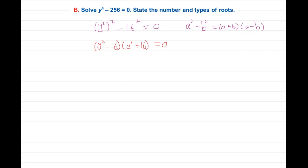Now we have to make each equation equal to zero. So y squared minus 16 equals zero, and y squared plus 16 equals zero. I'll write it a little bit more clear.